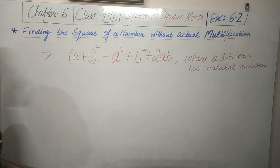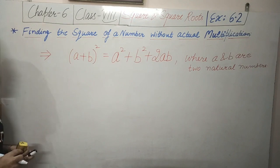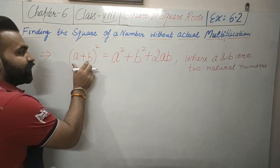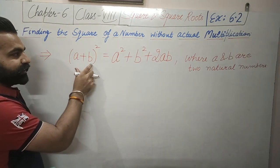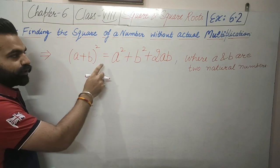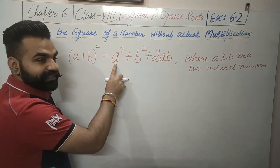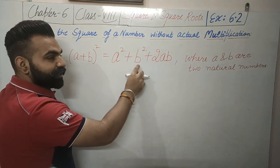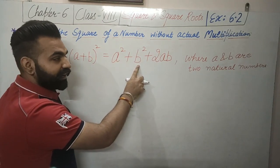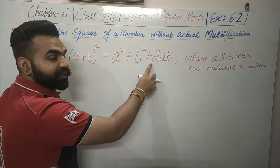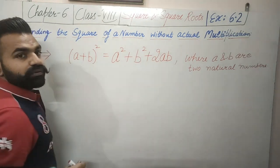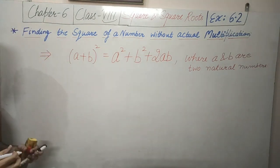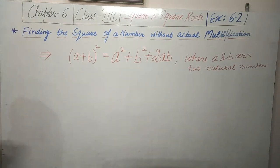So if we want to calculate the square of the sum of two numbers, this is equal to the square of the first number plus the square of the second number plus 2 times the first number into the second number.